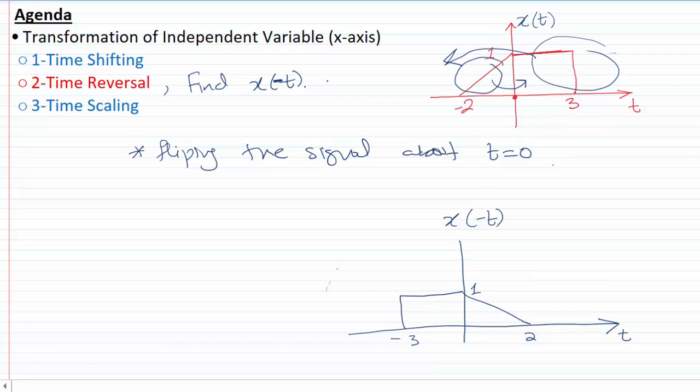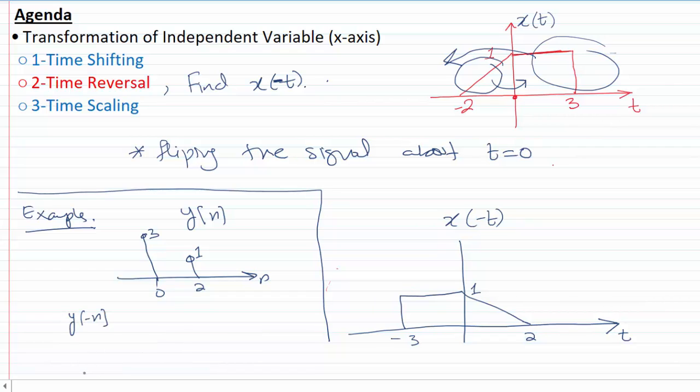For another example, if we have a signal which is something like: for n=2 we have one, and for n=0 we have three. If you're asked to find the time reversal of this signal, all we have to do is flip it about n equals zero.